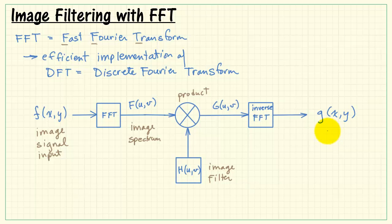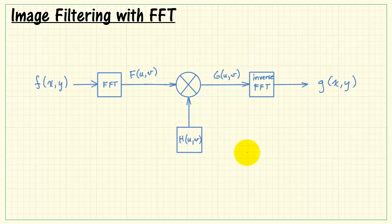And then pass that through the inverse two-dimensional FFT. That produces the filtered image as the output, g of xy. We call this the filtered spectrum. Well, this seems pretty straightforward. Let's take a look at some of the practical issues though that are necessary to make this work.